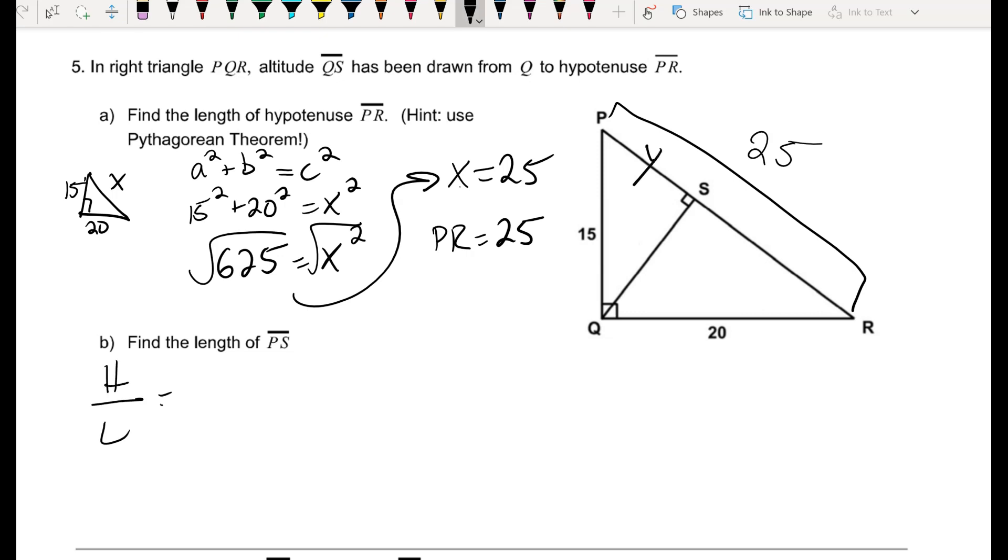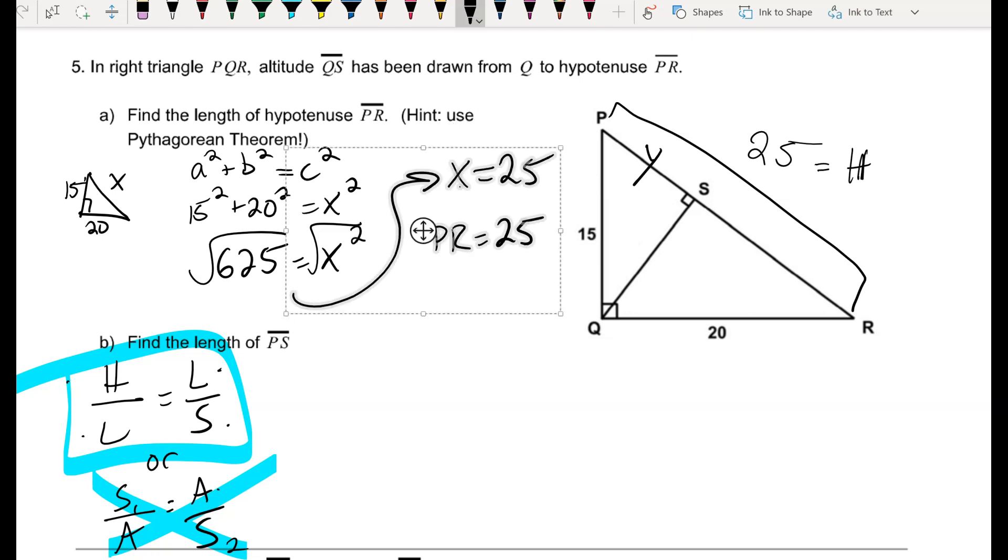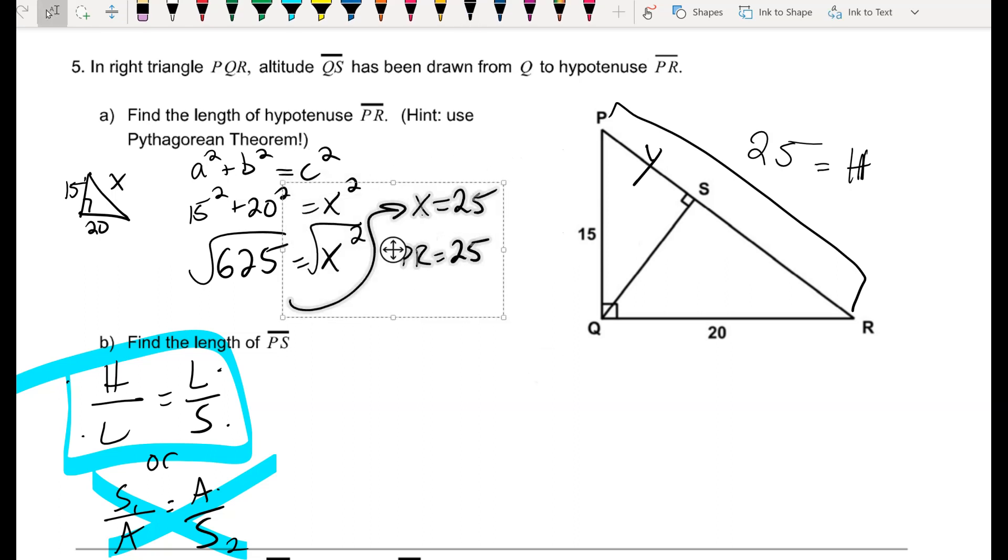And now they want me to find the length of PS. Well, this is either going to be one of those geometric mean problems, where I take the hypotenuse over a leg equals that same leg over its corresponding side, or it's going to be an altitude problem. But if you notice, I actually don't know any information about QS, which is my altitude here. So there's no way this could be an altitude problem. I have to look at the geometric mean.